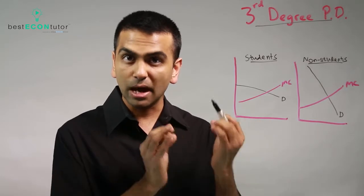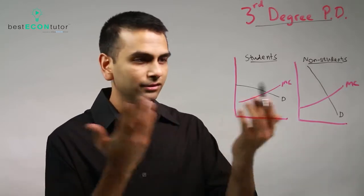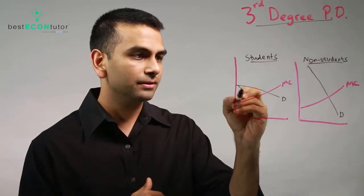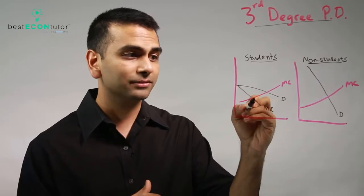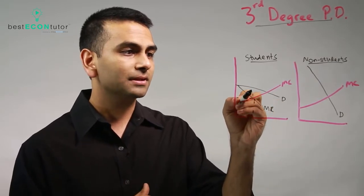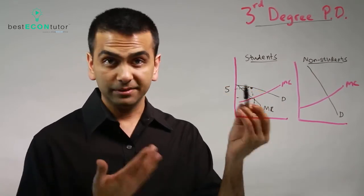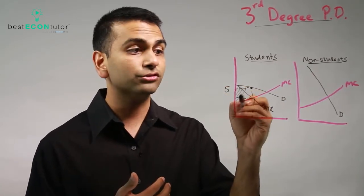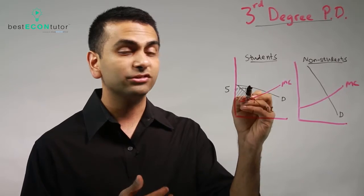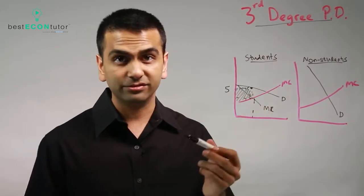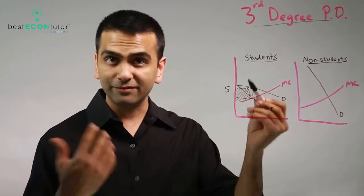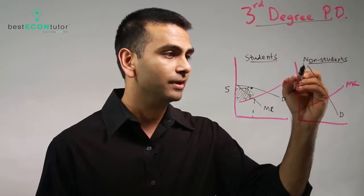So for students, let's say you do the MR, find the MR, see where MR equals MC and go up to the demand for the price. And let's say you found that was five. This means that you're making a lot more producer surplus by charging students five dollars a ticket instead of seven. So by charging them five, you're going to maximize profit.